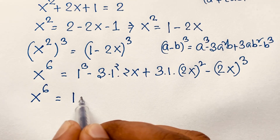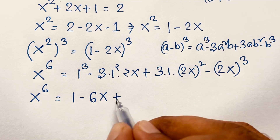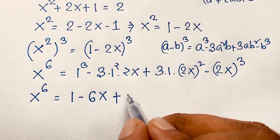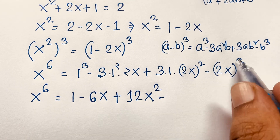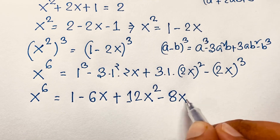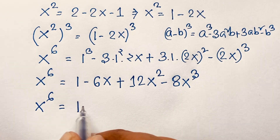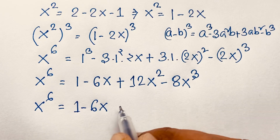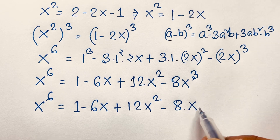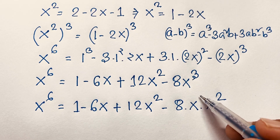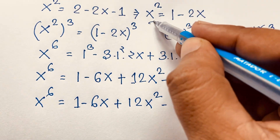Evaluating each term: 1 - 3×2x = 1 - 6x; then 3×4×x² = 12x²; then 2³ = 8, so minus 8x³. Since x³ = x · x² and the exponent 1 + 2 = 3, we now substitute x² = 1 - 2x wherever x² appears.